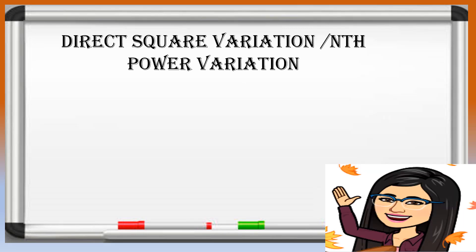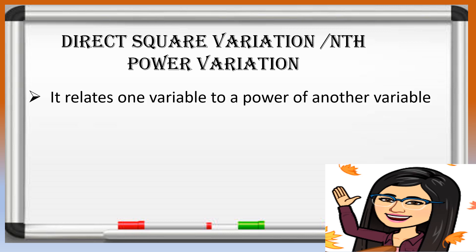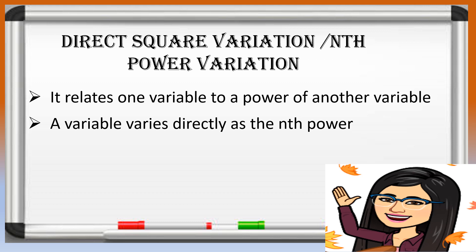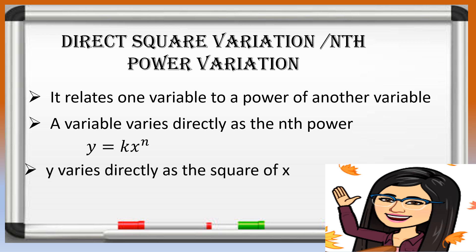This variation is described as follows: it relates one variable to a power of another variable. In general form, the variable varies directly as the nth power, written in symbols as y is equal to k times x raised to n. In this specific form, it is stated that y varies directly as the square of x, written in symbols as y is equal to kx squared.